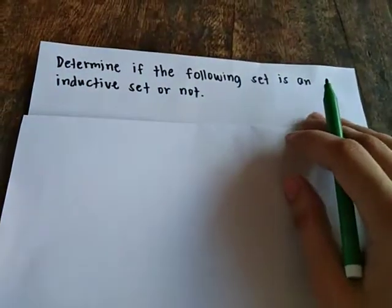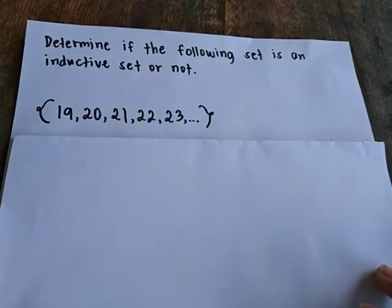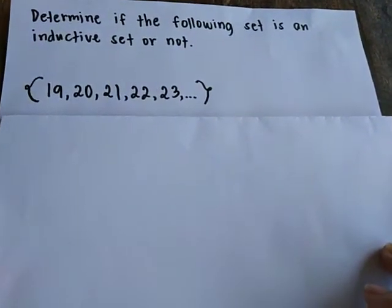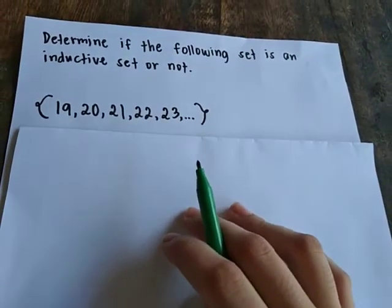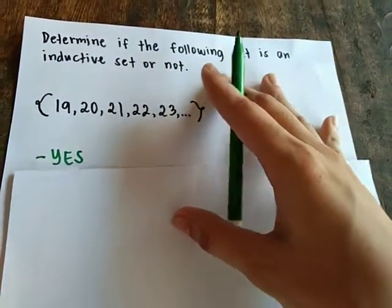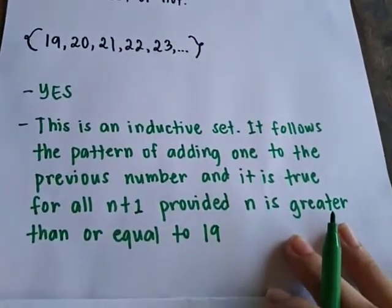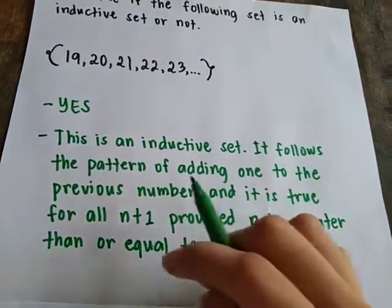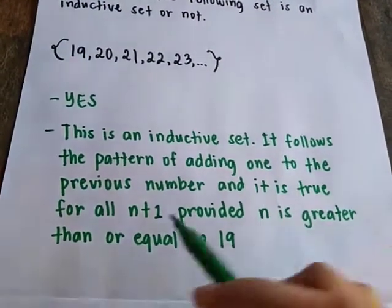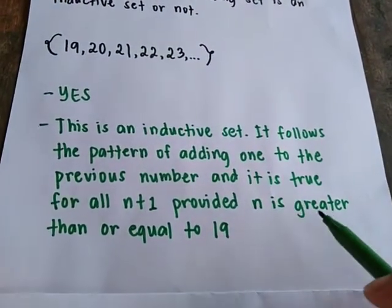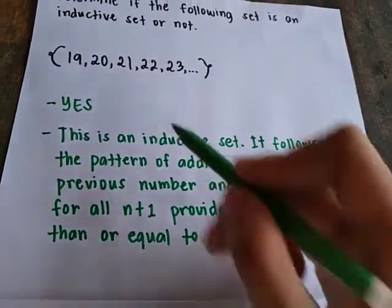Consider the set: 19, 20, 21, 22, 23, and so on. Is this an inductive set or not? Yes, it is an inductive set. This is an inductive set because it follows the pattern of adding 1 to the previous number, and it is true for all n plus 1, provided n is greater than or equal to 19.